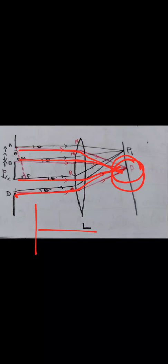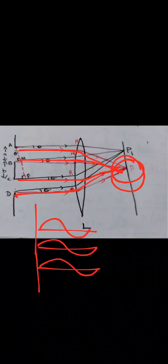All the waves reach point P with no phase difference, meaning all of them reinforce — constructive interference takes place and you get a maxima at P. Now we have to study the diffraction pattern on either sides of P, for that we consider a point P1.